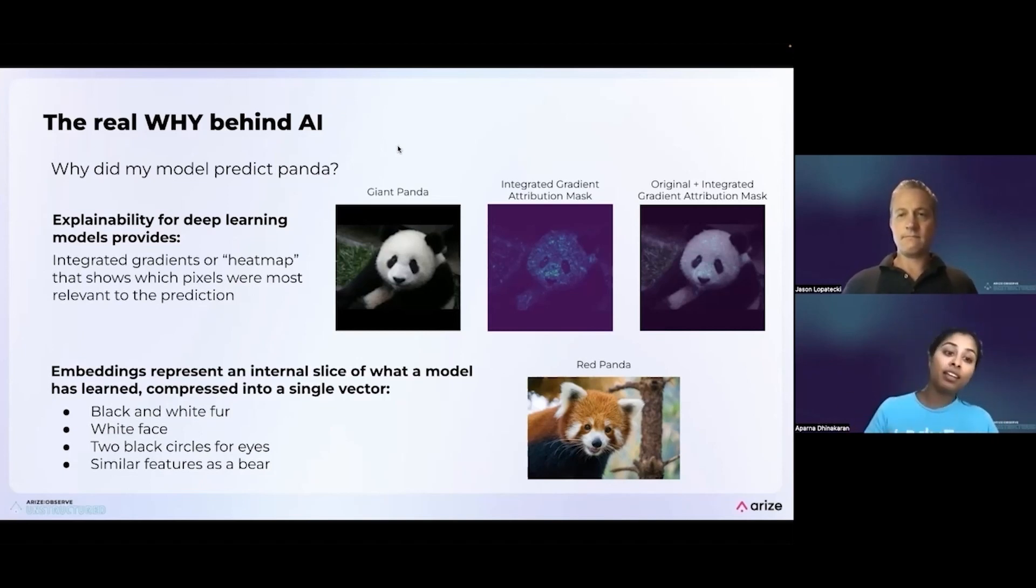Versus an embedding, you can think about the embedding as really this internal slice of what the models learned compressed into a single vector. And that embedding can contain information like, does this image of a panda have similar features to a bear? Does it have what color fur does it have? What color is this panda's face? And so you can actually learn some of the structure of what the models learn. And it can be much more useful in troubleshooting these types of unstructured data than explainability even can be.